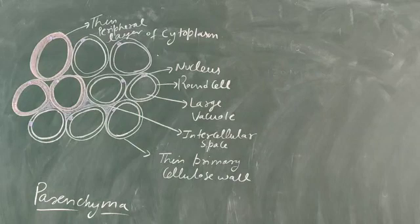So there is a large central vacuole present. And these cells are living. That is why you can see the nucleus and a vacuole, and the protoplasm is also present.